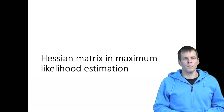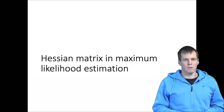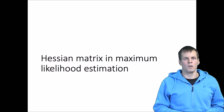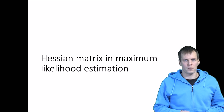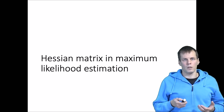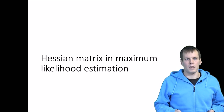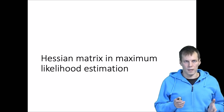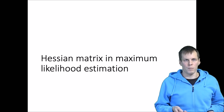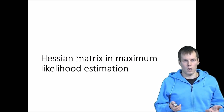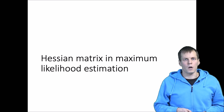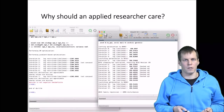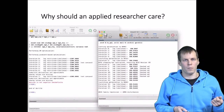In this video I'll talk about the role of the Hessian matrix in maximum likelihood estimation, particularly when we find the maximum of the likelihood function using Newton's technique. I'll also talk about how to interpret the Hessian matrix and what you should check when there may be a convergence problem in your model or if your model doesn't converge. The first thing to address is why an applied researcher should care.